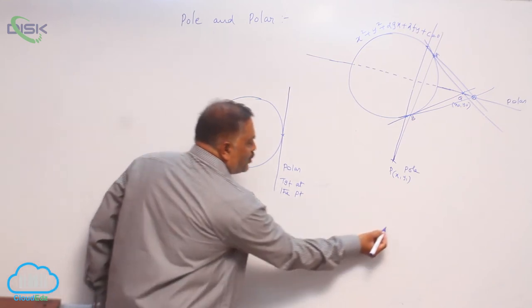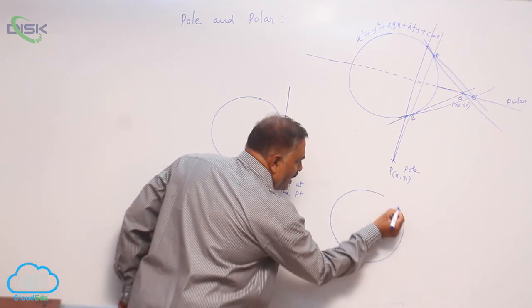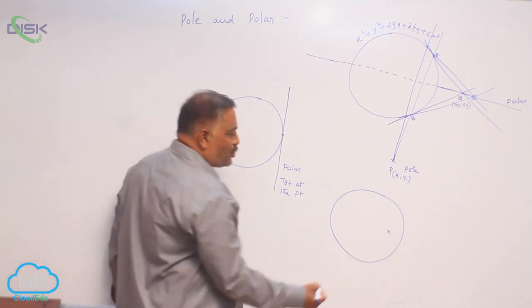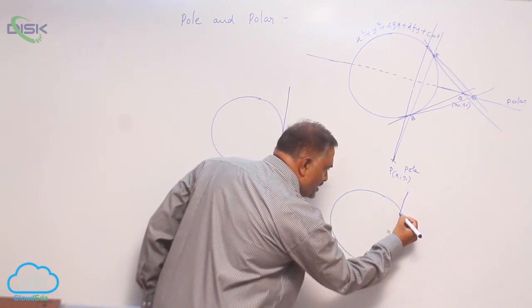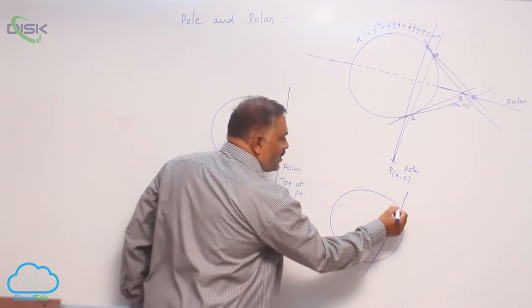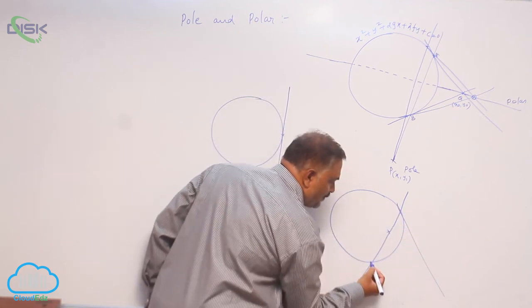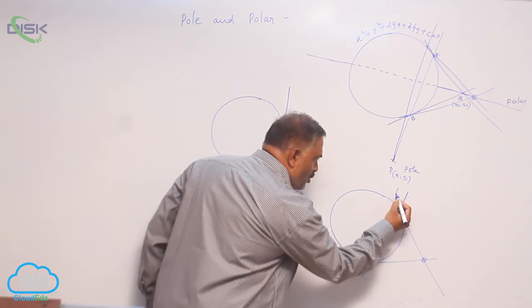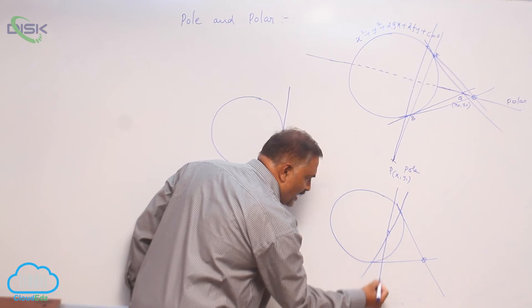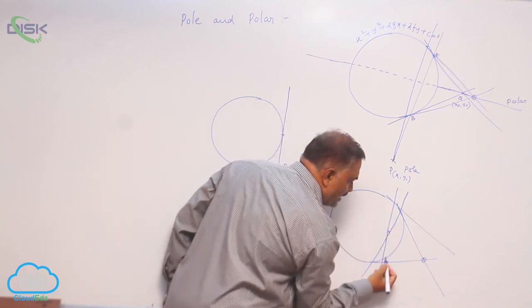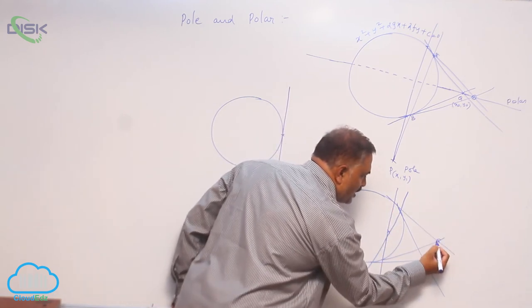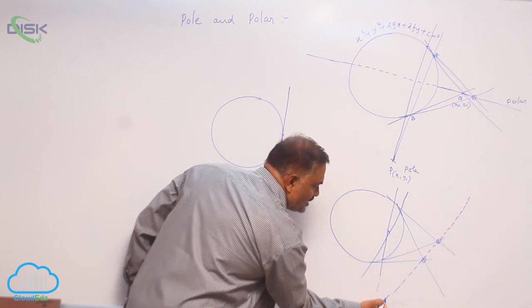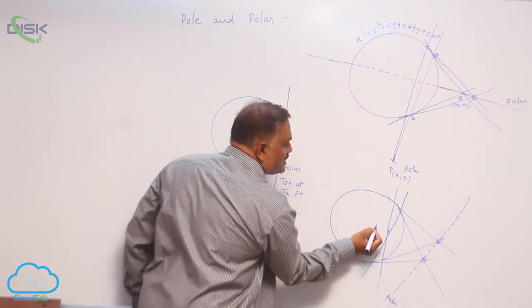Suppose you take a circle equation and select a point inside the circle. Through this point, if you draw one secant line like this and draw tangents like this, again you will get one point of intersection. Again, you take one more secant like this. Again, draw tangents and you observe that all these points will form a straight line. This is again polar. This is pole.